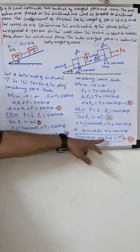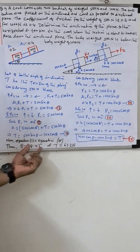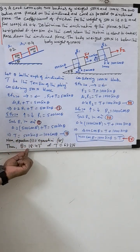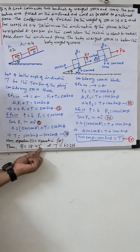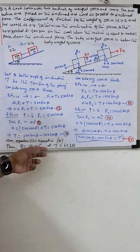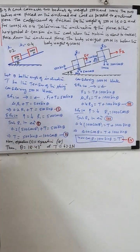Setting equation one equal to equation four and solving, we get theta equal to 18.43 degrees. Substituting this value back, the tension T is equal to approximately 15.915 newtons.